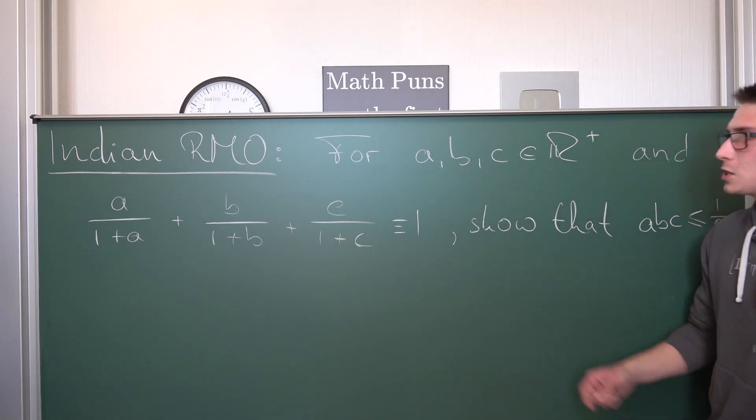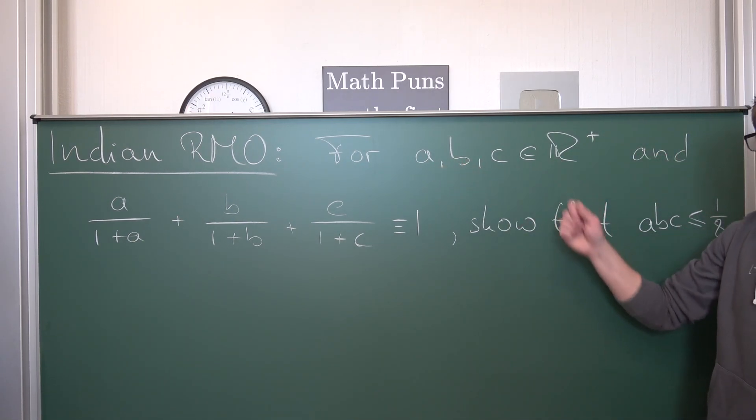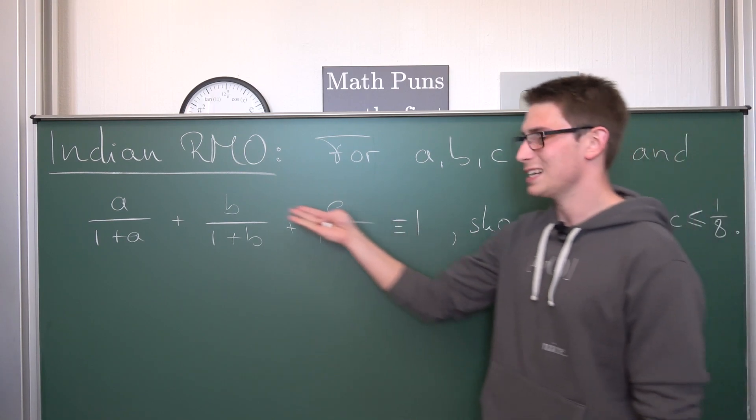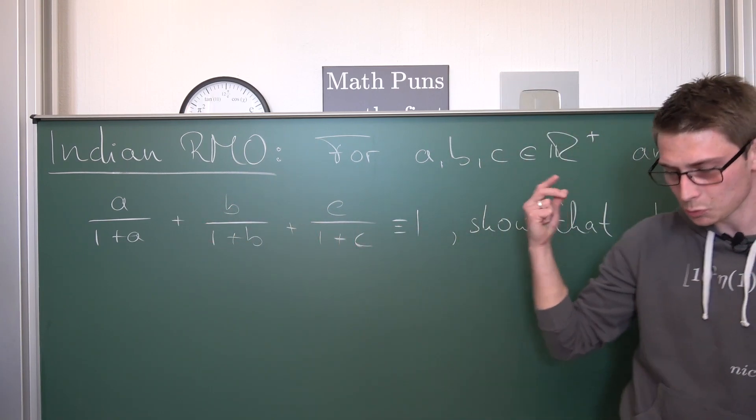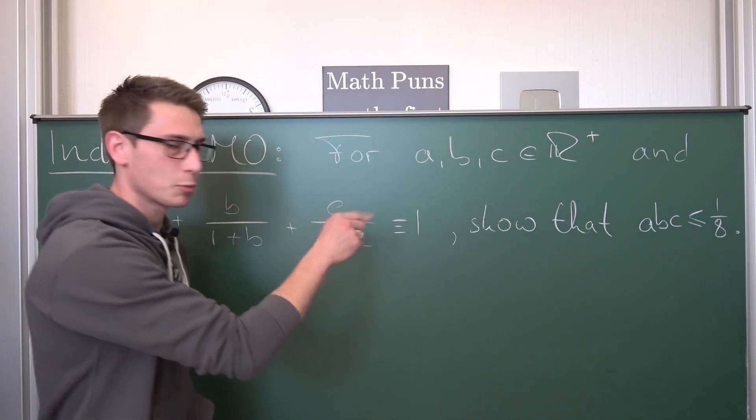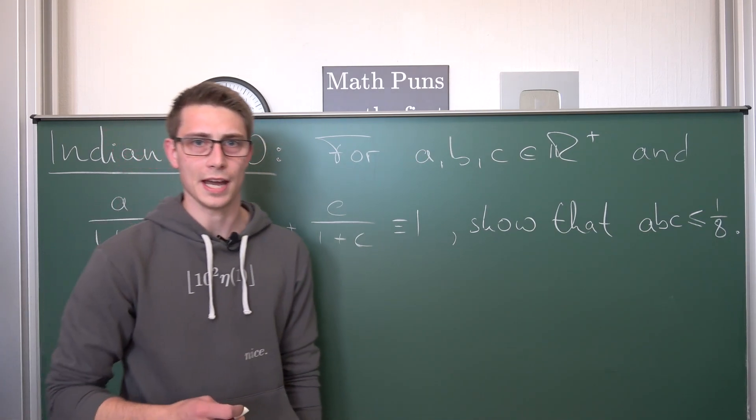We are going to do something from the regionals. Namely, what we are going to take a look at is we got three numbers out of the positive reals and they are satisfying this equation right here. And today we want to prove that the product of a, b, and c is less or equal to 1/8.